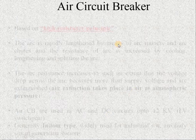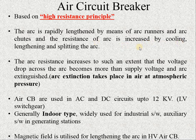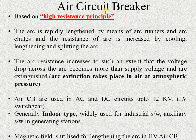The first type of circuit breaker is the air circuit breaker, which is based on the high resistance principle. The arc is rapidly lengthened by means of arc runners and arc chutes, and the resistance of the arc is increased by pulling, lengthening and splitting. All three methods are used by the air circuit breaker to extinguish the arc.